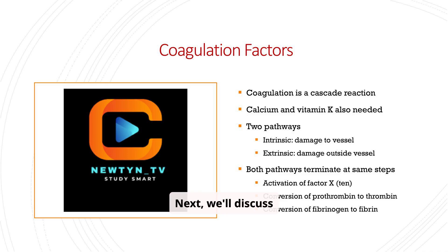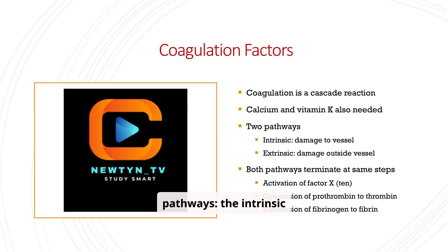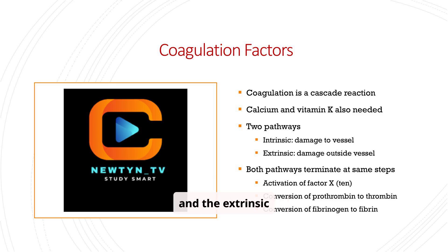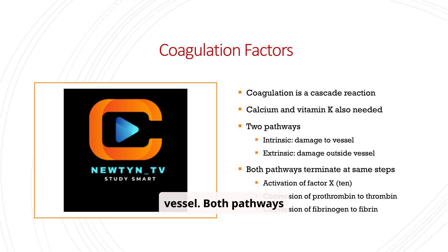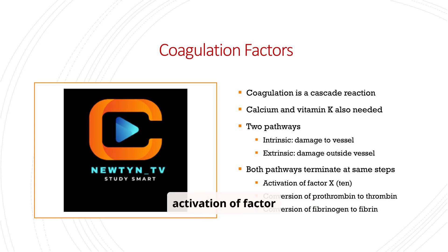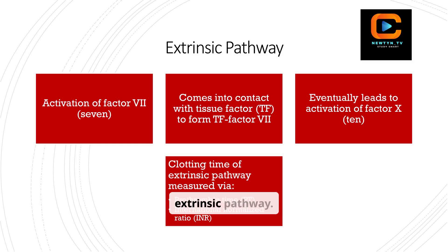Next, we'll discuss coagulation factors. Coagulation is a cascade reaction requiring calcium and vitamin K. There are two pathways: the intrinsic pathway, triggered by damage to the vessel, and the extrinsic pathway, triggered by damage outside the vessel. Both pathways ultimately converge at the same steps: activation of factor X, conversion of prothrombin to thrombin, and conversion of fibrinogen to fibrin.